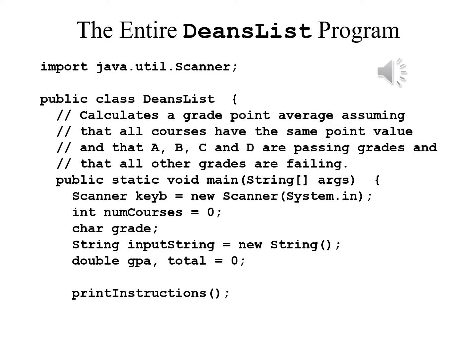Scanner keyboard = new Scanner(System.in), which means that we now have keyboard input available. int numCourses = 0, initialized like that because we don't yet know how many courses there are. char grade. We are going to need to use a String to read in a value and simply take the first character at the beginning of the string. String inputString = new String. double gpaTotal = 0.